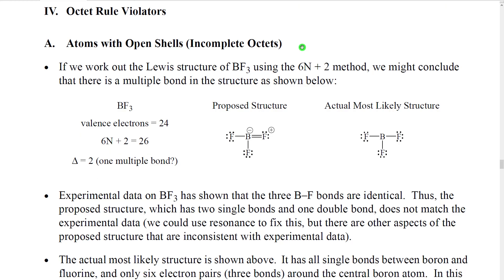Next, I'm going to talk to you about octet rule violators. The first type of octet rule violator that we're going to look at is what we call atoms with open shells. In other words, the valence shell is not complete. We call these open shells sometimes incomplete octets. It's indicating that we don't have an octet on that atom.